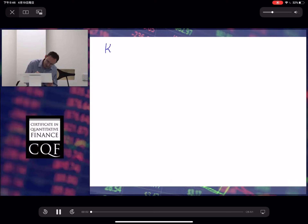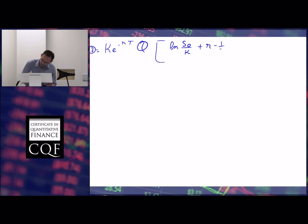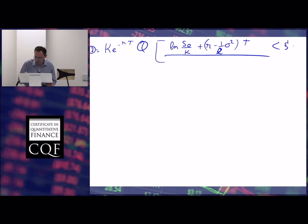Continuing, we are at k·e^(-rt) times the probability under Q of log of S0 divided by K, plus r minus one-half of sigma squared, multiplied by t — and that's less than xi multiplied by sigma times square root of t.